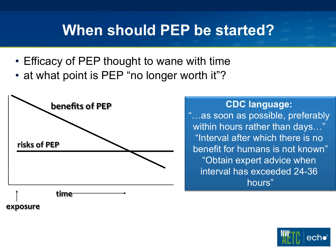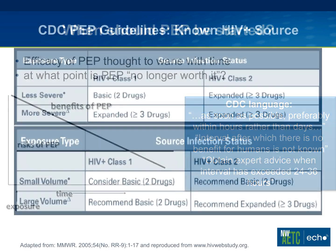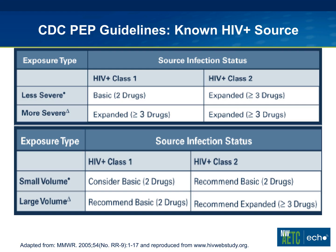The CDC says the interval after which there's no benefit is not really known, and they suggest obtaining expert advice when the interval has exceeded 24 to 36 hours. In practice, we use 72 hours as a good benchmark for when we would stop offering PEP or when we feel there's not really much evidence that it's going to help.